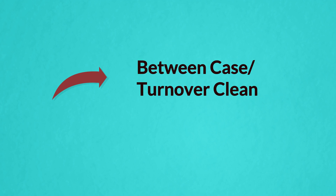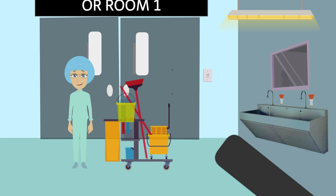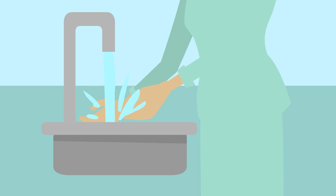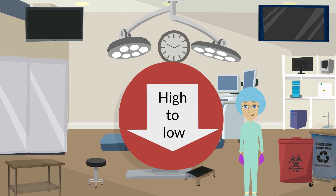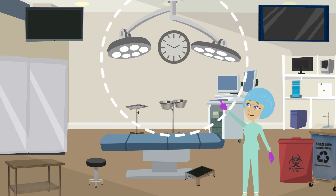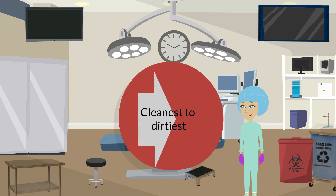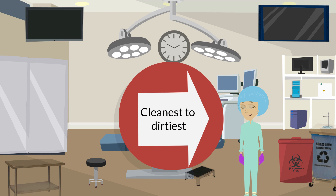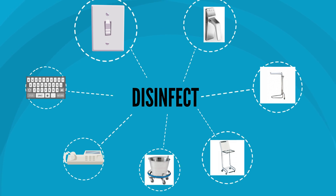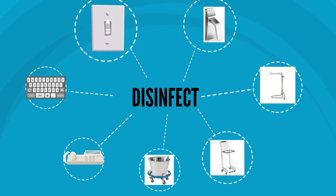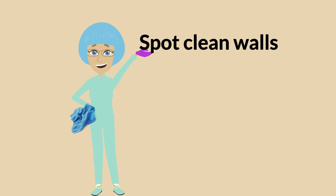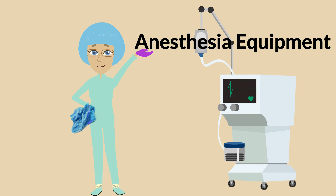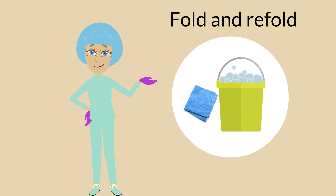Between case or turnover clean is cleaning performed between cases during the day. Follow these steps: check that the patient has left the room; perform hand hygiene, assemble equipment, and put on clean gloves; remove trash and linen and replace biohazard containers as needed; spot clean from high to low, disinfecting any visible residue on ceilings or overhead equipment; clean and disinfect procedure lights and other overhead equipment that may have been touched during the previous case; clean horizontal surfaces that may have been touched or contaminated, moving from cleanest to dirtiest; disinfect light switches, door push plates and handles, Mayo stands, hamper stands, kick buckets, telephones, keyboards, and other items as needed; clean and disinfect the procedure bed and remote control; spot clean walls. Anesthesia equipment should be cleaned between cases by designated trained staff. Fold and refold the cleaning cloth when disinfecting and change it often during the process.